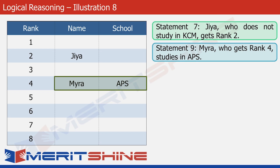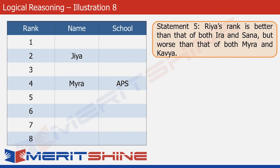Now we'll look at statements that are slightly more complicated. Statement 5 tells us that Riya's rank is better than that of both Ira and Sana, but worse than that of both Myra and Kavya. So Riya is better than Sana and Ira — denoted by the greater-than sign — and Myra's rank is better than Riya's. So the order becomes: Myra, then Riya, then Sana and Ira. We've written Sana and Ira together because we haven't yet figured out who among the two got a better rank.